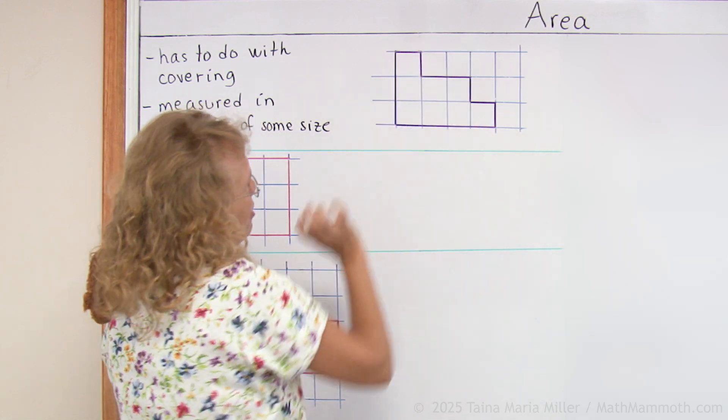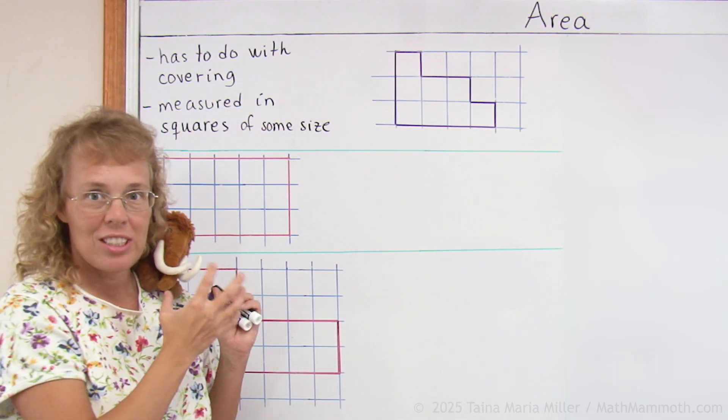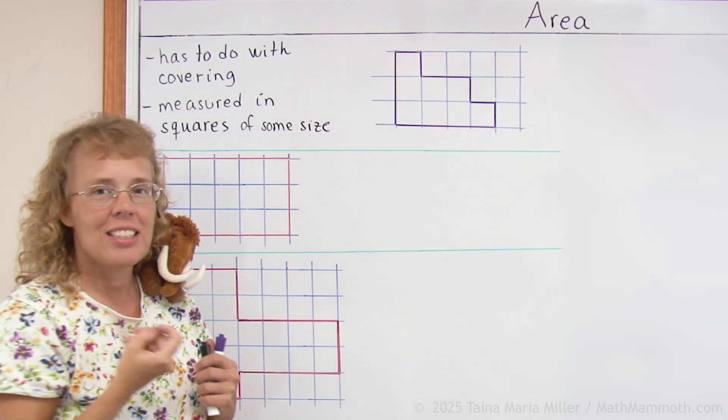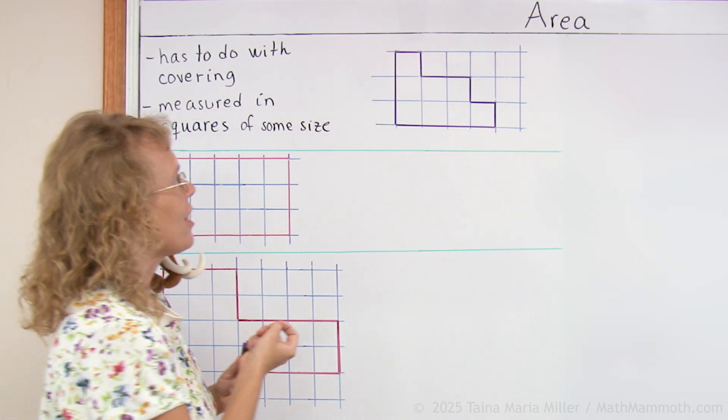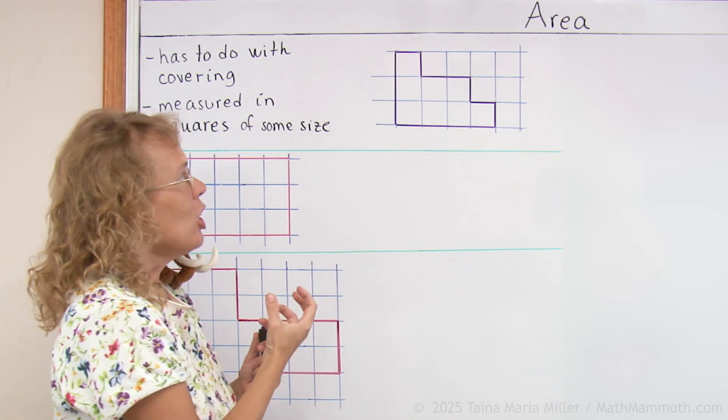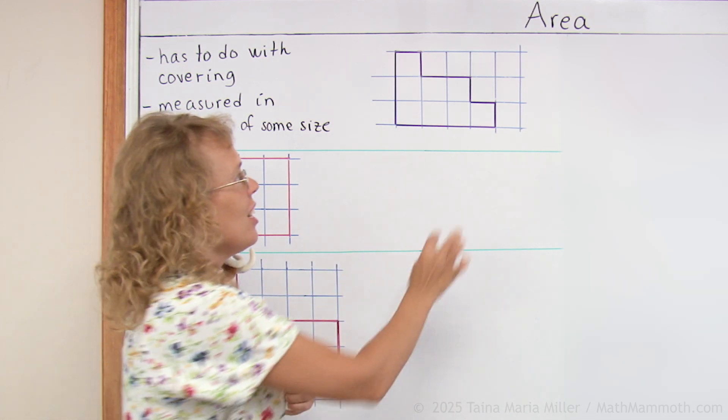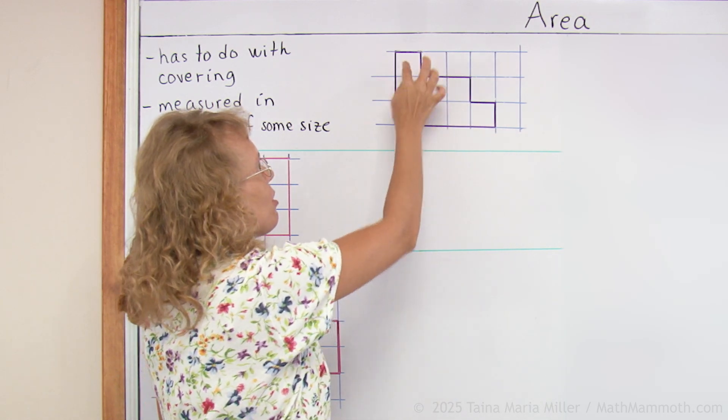Let's say that I have this kind of a funny shape and it's on this grid and there's all these squares, right? So basically I just count how many squares are there in this shape. Or you can think of it as covering. If I had little square tiles, how many square tiles would I need to cover this shape?